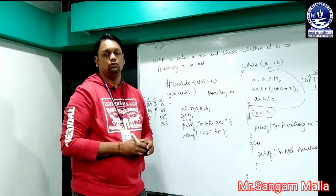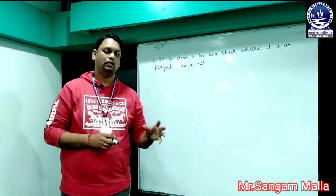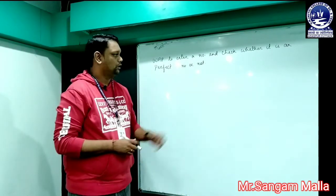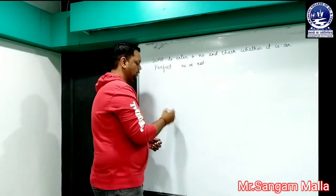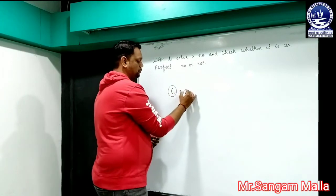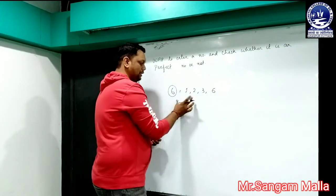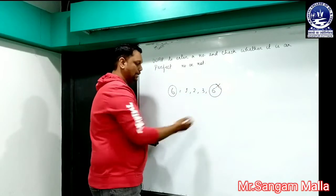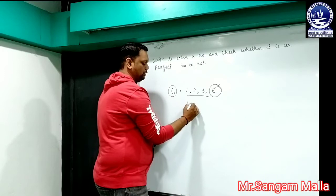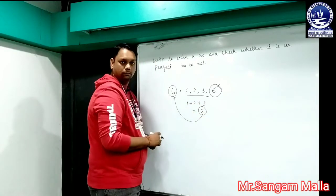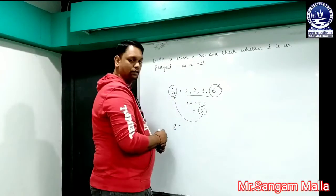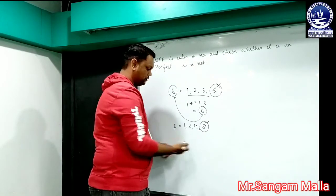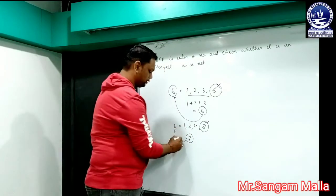Now we will take another example to calculate the perfect number. A perfect number is defined as follows: if we take the number 6, its factors are 1, 2, 3, and 6. We exclude the original number and add all the rest: 1 + 2 + 3 = 6. Since that equals the original number, 6 is a perfect number. Similarly, for the number 8, the factors are 1, 2, 4, and 8. Excluding 8: 4 + 2 + 1 = 7. Since 7 ≠ 8, it is not a perfect number.